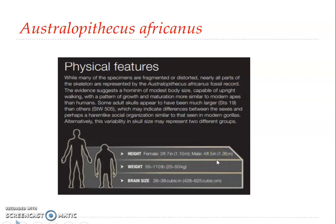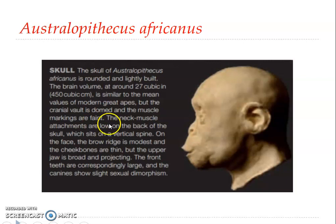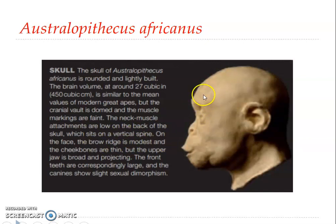Height is believed to be around 3.7 to 4.5 feet, and brain size ranges from 428 to 625 cubic centimeters, compared to over 1,000 in modern humans. The skull is rounded and lightly built with a domed cranial vault and faint muscle markings. The neck muscle attachments are low on the back of the skull, which sits on a vertical spine. The brow ridge is modest, and the cheek bones are thin, but the upper jaw is broad and projecting — an ape-like character.